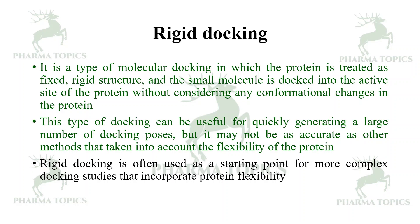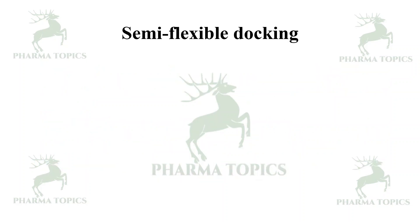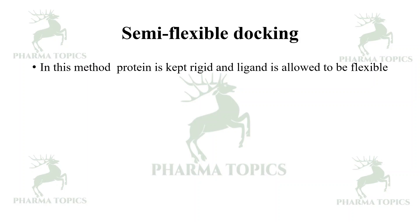Next is semi-flexible docking. In this method, the protein is kept rigid and the ligand is allowed to be flexible. In rigid docking, both the protein and the ligand are rigid, whereas in semi-flexible docking the protein is kept rigid and the ligand is allowed to flex.